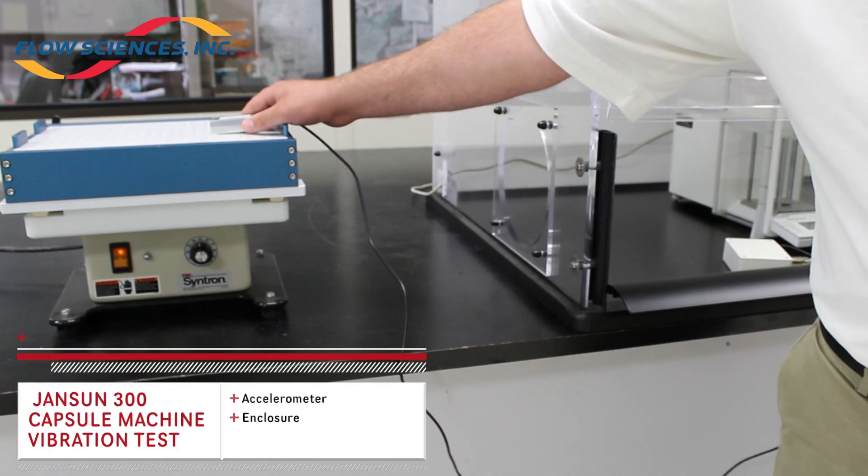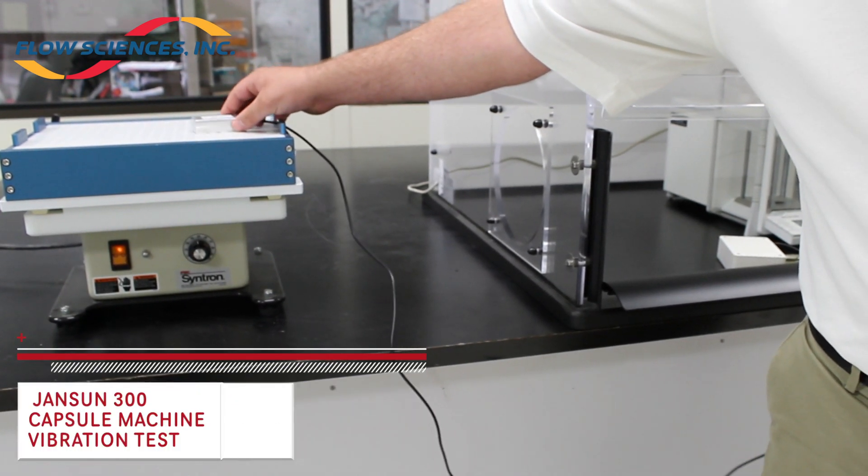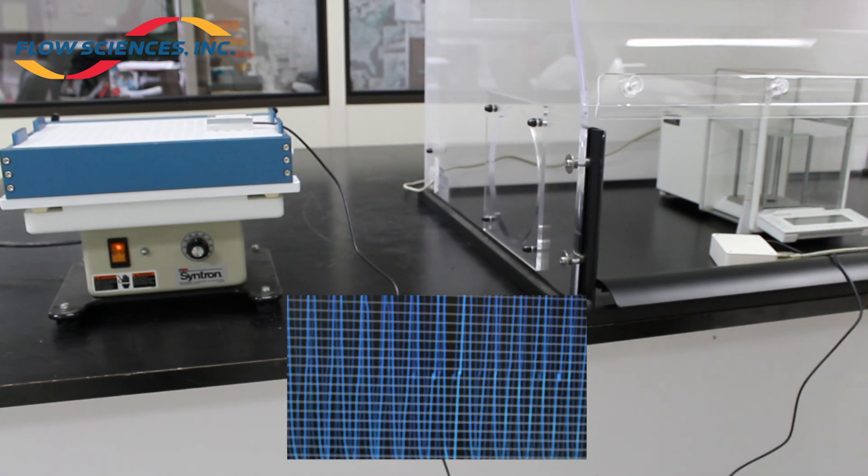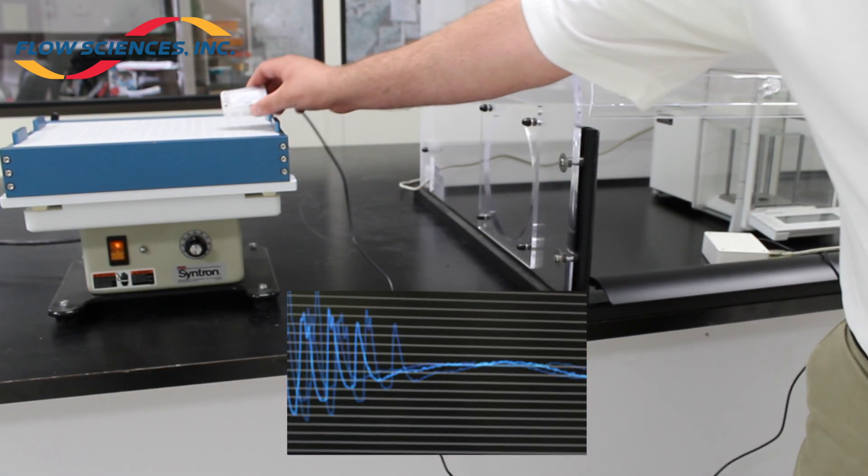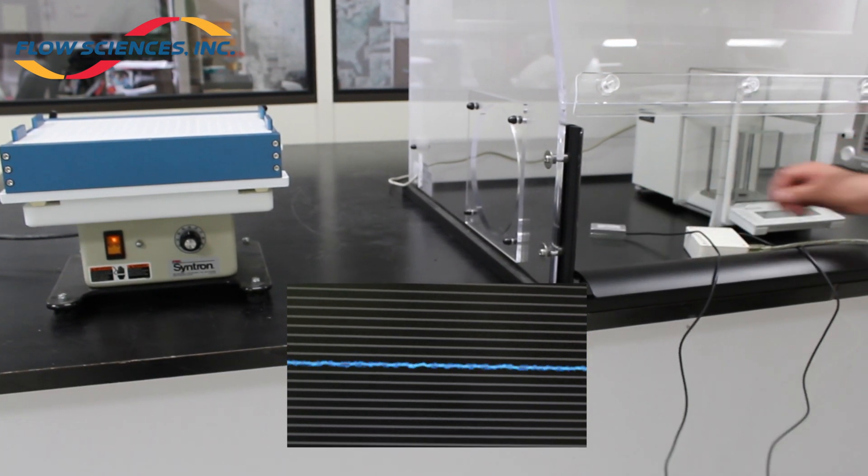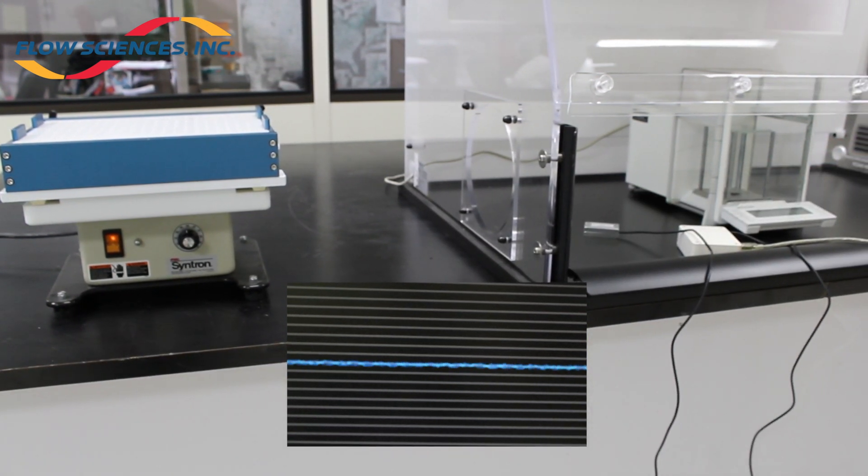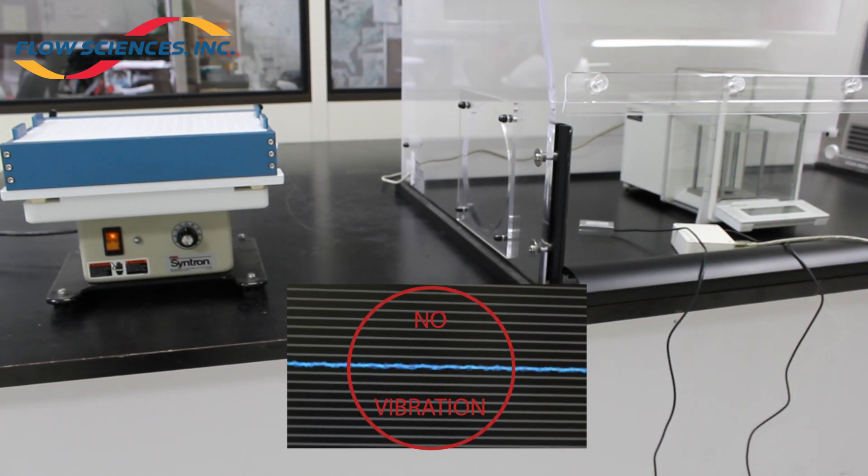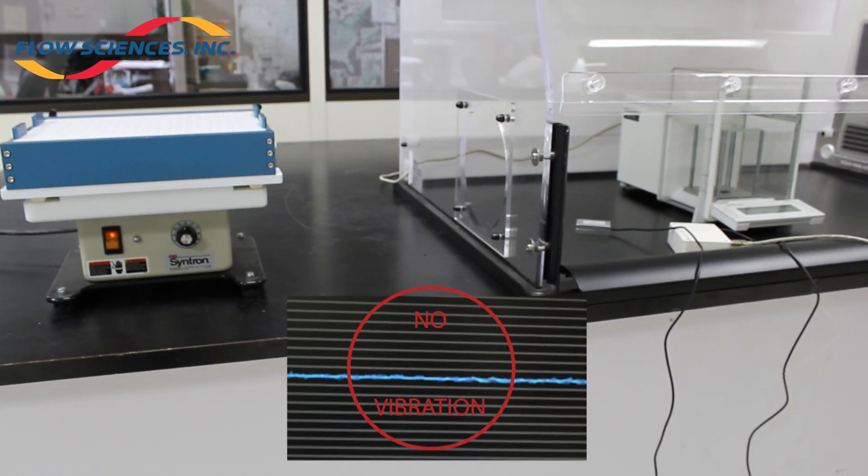Test 8: A Janssen 300 count capsule machine at approximately 50% power was used for an example of a machine that creates vibration to determine a baseline reading for actual G force. We then moved the sensor into the enclosure to determine if the vibration from the machine would transfer onto the phenolic work surface.